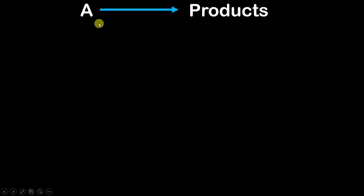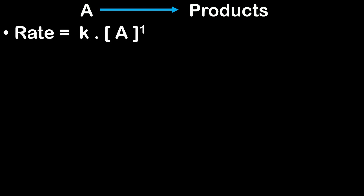Let us consider a simple equation. In this reaction, A is a reactant and it gets converted into products. We assume that this is a first order reaction. To find out the rate of the reaction, we make use of rate law and find that the rate of the reaction equals K — the rate constant — into the molar concentration of A raised to the power 1, because this is a first order reaction.